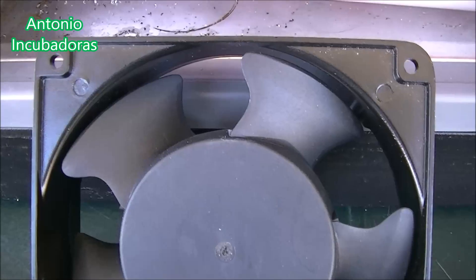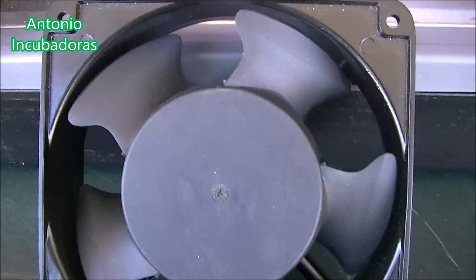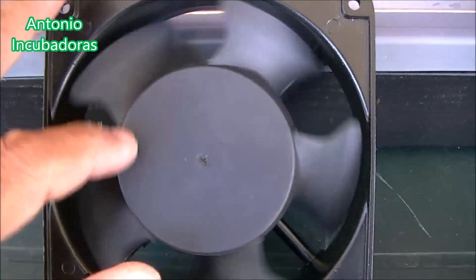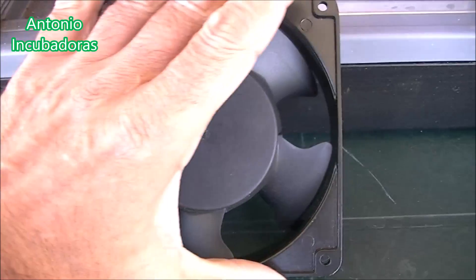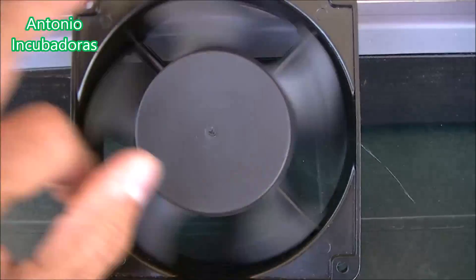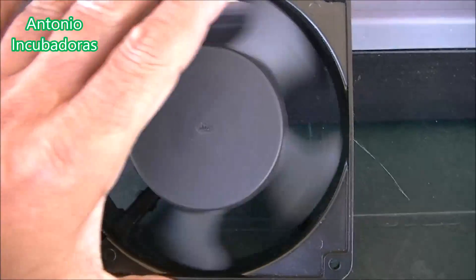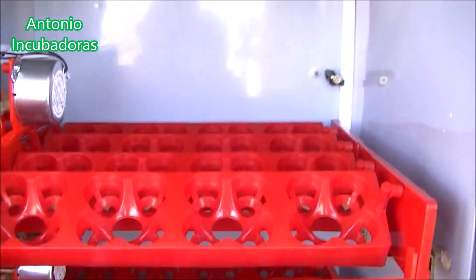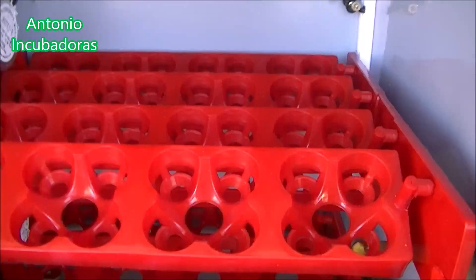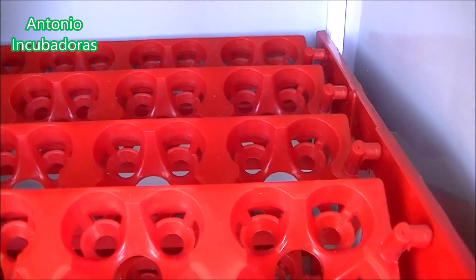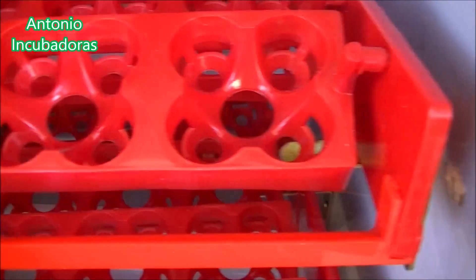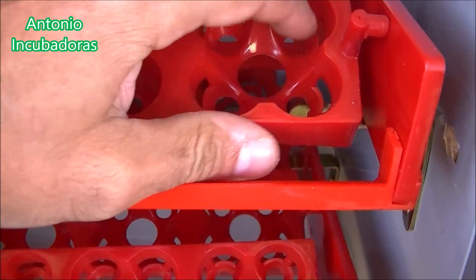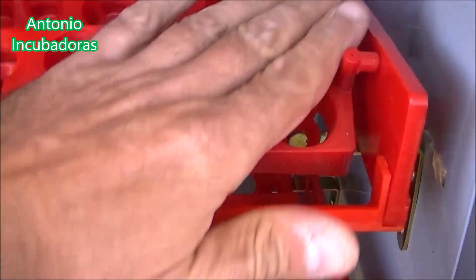Este es un ventilador exactamente igual que el ventilador que le hemos puesto a nuestra incubadora. Es un ventilador que no te dejes engañar por su tamaño, no es demasiado grande, pero que mueve mucho, mucho aire. Funciona bastante bien y para las dos bandejas y para esta incubadora que no es muy grande, porque aunque tengamos dos bandejas, cada una de ellas tiene una capacidad de 16 huevos de gallina. Y en cada hueco de huevos de gallina tiene cuatro huecos pequeños para huevos de codorniz u otras especies que sean más pequeñas.